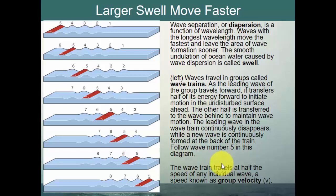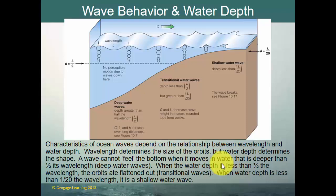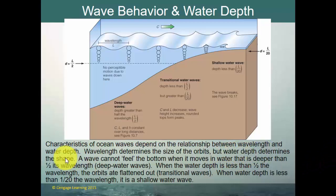How do waves behave in different water depths? If you take the wavelength L and divide it by two, that is the depth at which wave motion stops — there's no perceptible motion below this depth. As the wave moves into shallower water, it begins to lose depth and that impacts the behavior of the wave. Wavelength determines the size of the orbits, but water depth determines the shape. The orbits are nearly circular in open water, but once they reach a depth that's half their wavelength, the orbits begin to flatten out.